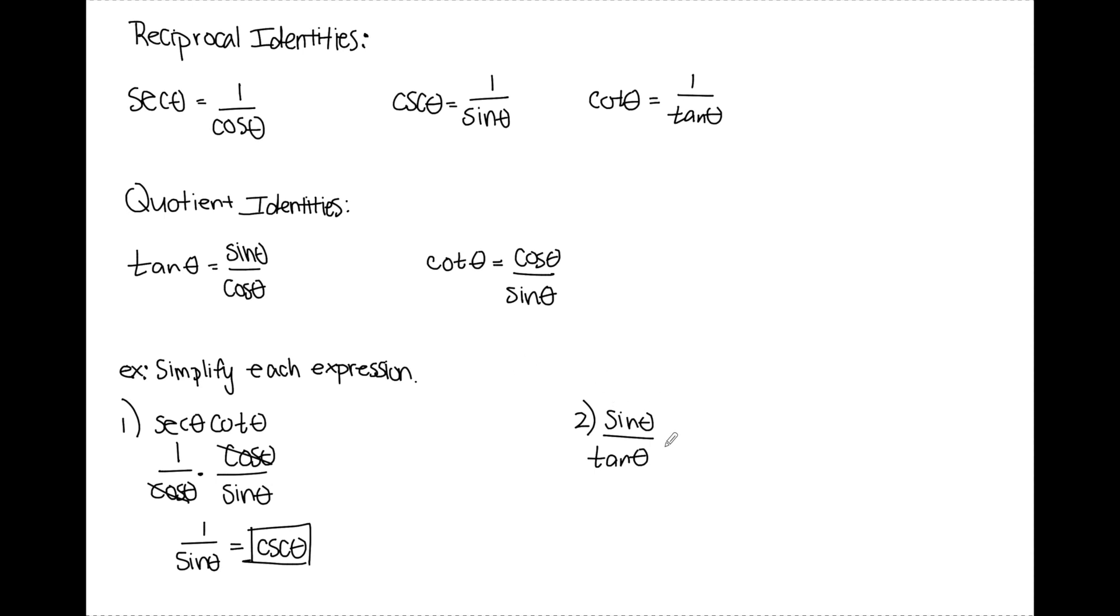Number two, same idea. I'm going to rewrite my expression so I have only sines and cosines. Sine theta stays. Tangent theta is equal to sine theta over cosine theta. This is a complex fraction, so I'm going to keep change flip.